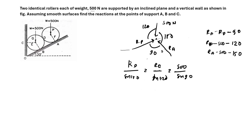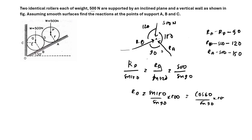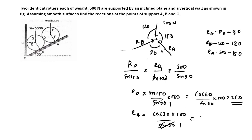Calculating RD: RD equals sin 150 divided by sin 90 into 500. Since sin 150 equals cos 60, and cos 60 is 0.5, RD equals 250 Newton. For RA: RA equals sin 120 divided by sin 90 into 500. Sin 120 equals cos 30 equals root 3 over 2. So RA equals 433 Newton. Therefore RA is 433 Newton and RD is 250 Newton.